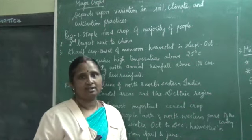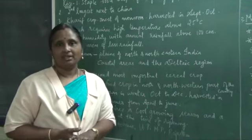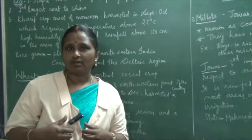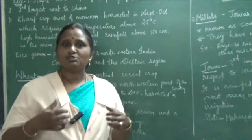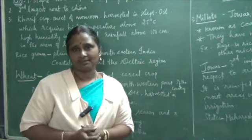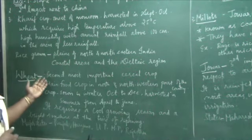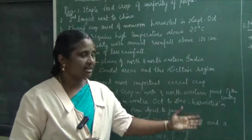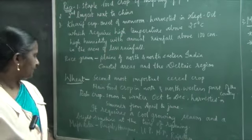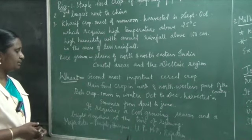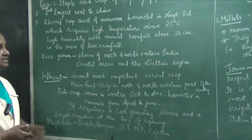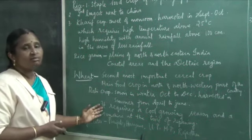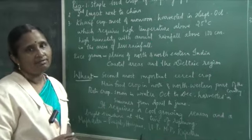Now we come to the next major crop: wheat. In the southern part of India, consumption of rice is more, while consumption of wheat is more in the northern part of India. Wheat is the second most important cereal crop and main food crop in the north and northwestern part of the country. It is a Rabi crop, sown in winter from October to December and harvested in summer from April to June.